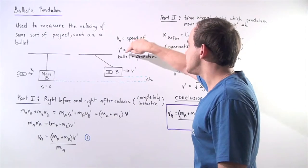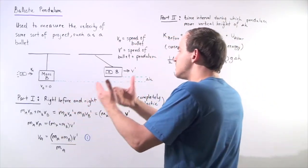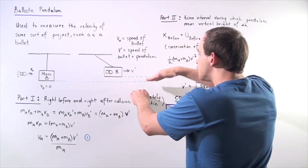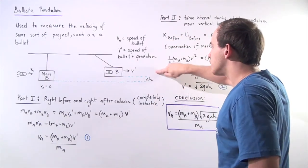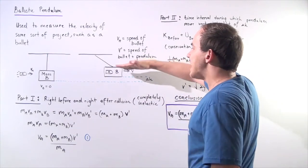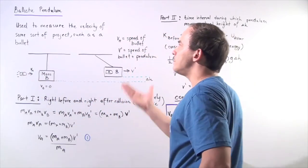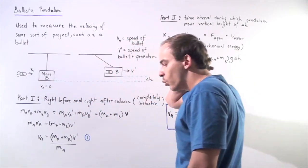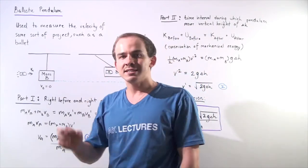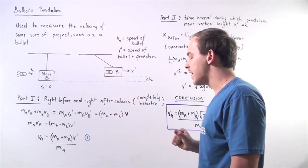Velocity v prime is the speed of the bullet plus the block right after the collision takes place. Because it has velocity, it will move a certain vertical displacement, change in h. Eventually, when it moves that displacement, it will come to rest and then swing backwards. This is known as a ballistic pendulum. We want to use this setup and the conservation laws to solve for the velocity of the bullet before the collision.